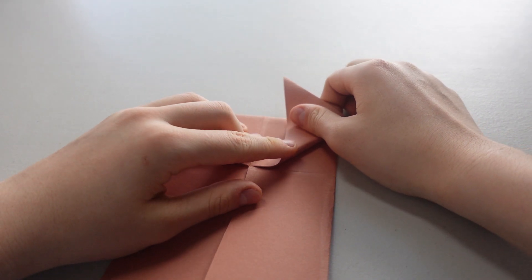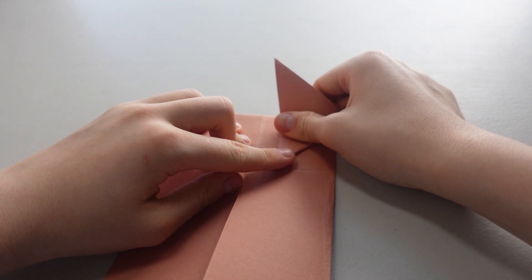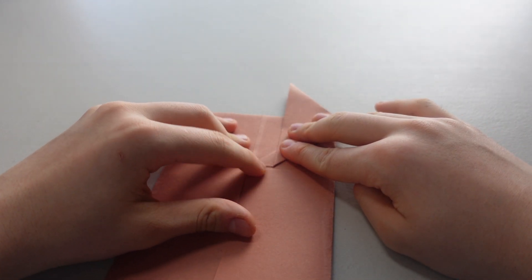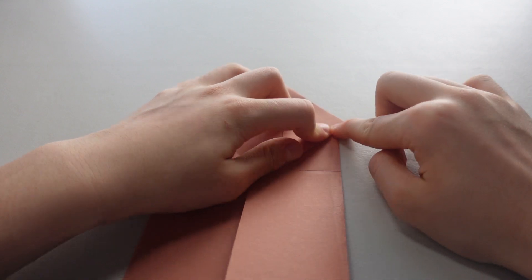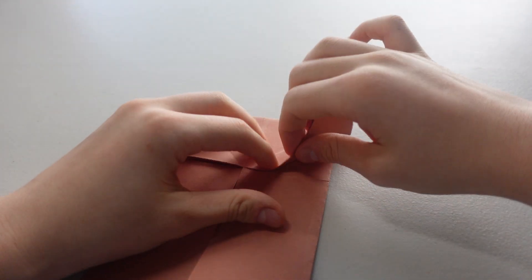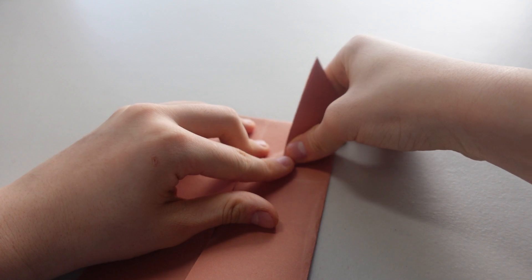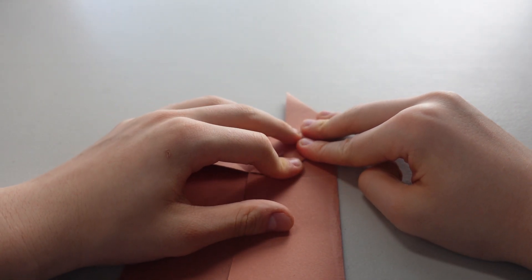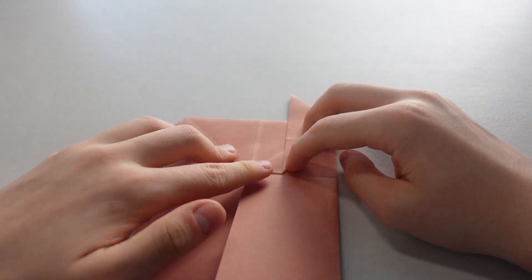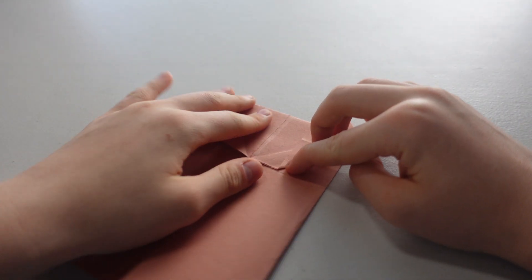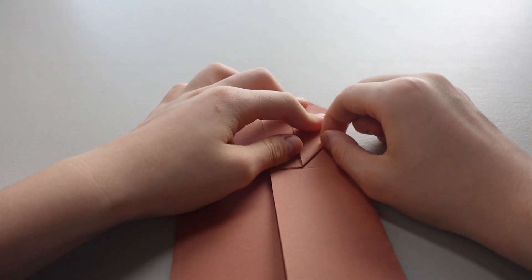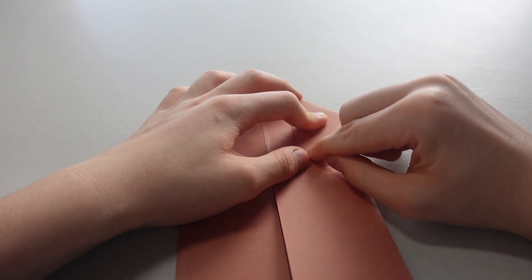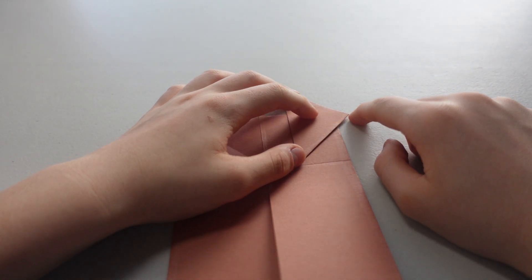Now we're going to fold this, but not all the way. We want to leave a little bit. We're going to leave about this much. You know what, let's leave a little bit more. Okay, we're going to leave about a thumb amount. So we're going to leave about this much.